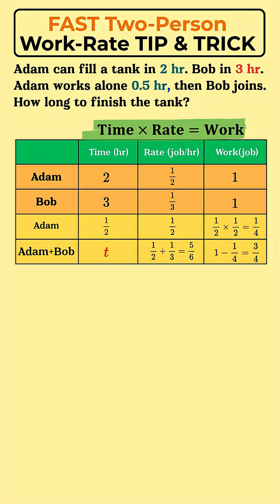Step 5: Calculate the final time. Their combined rate, 5 sixths, times the new time T equals the work remaining, 3 fourths.